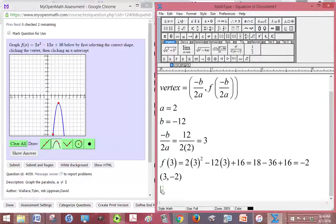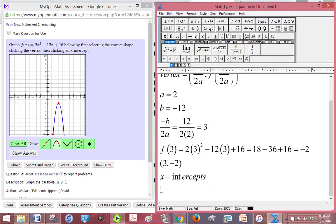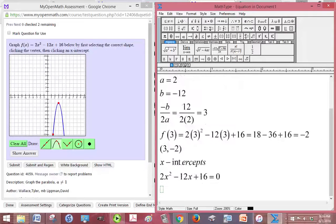So now let's look for x-intercepts. All right, so one way to get x-intercepts is to factor and solve. All right, so we have 2x squared minus 12x plus 16, and we're trying to find the x-intercepts, so we set it equal to 0.